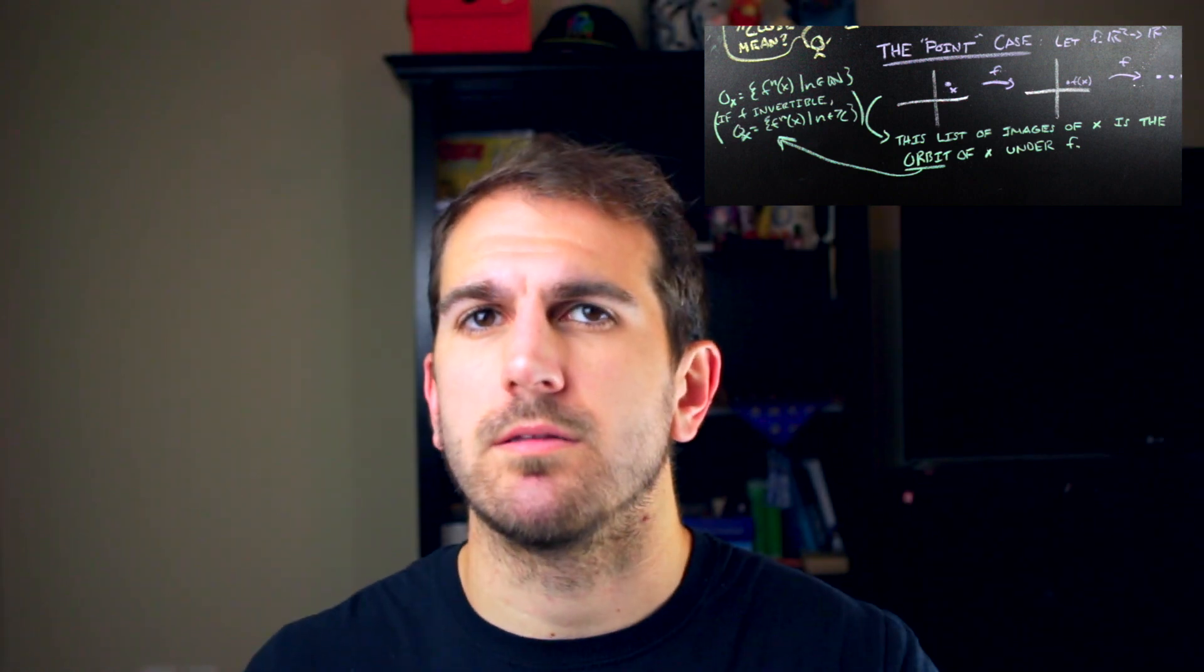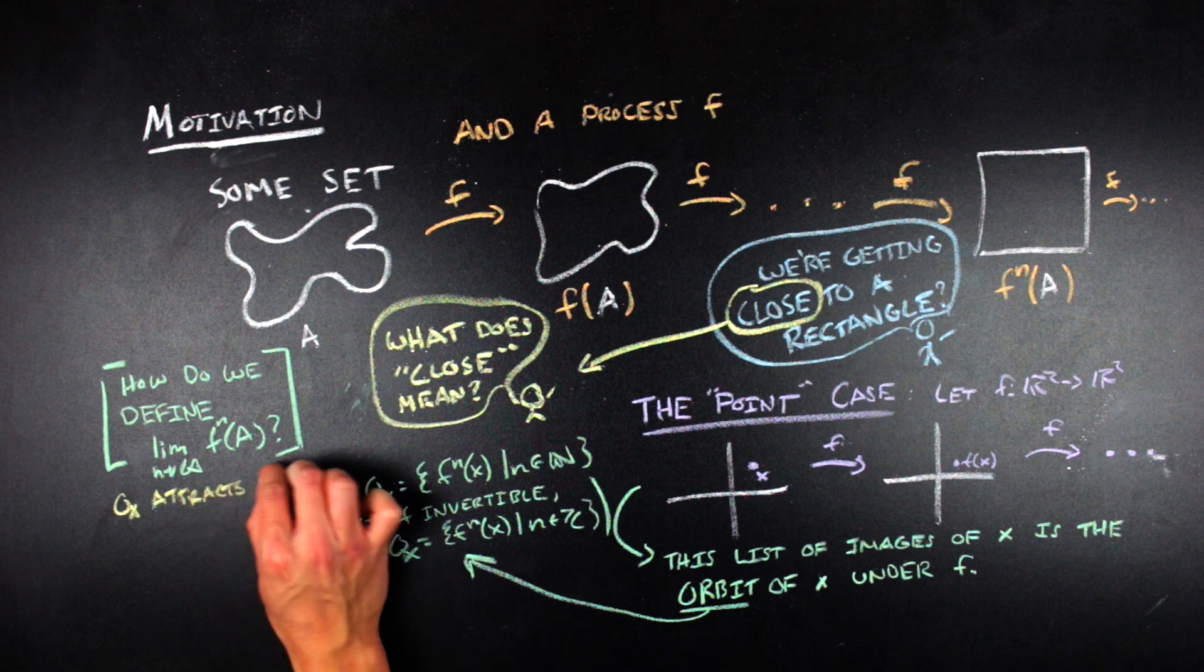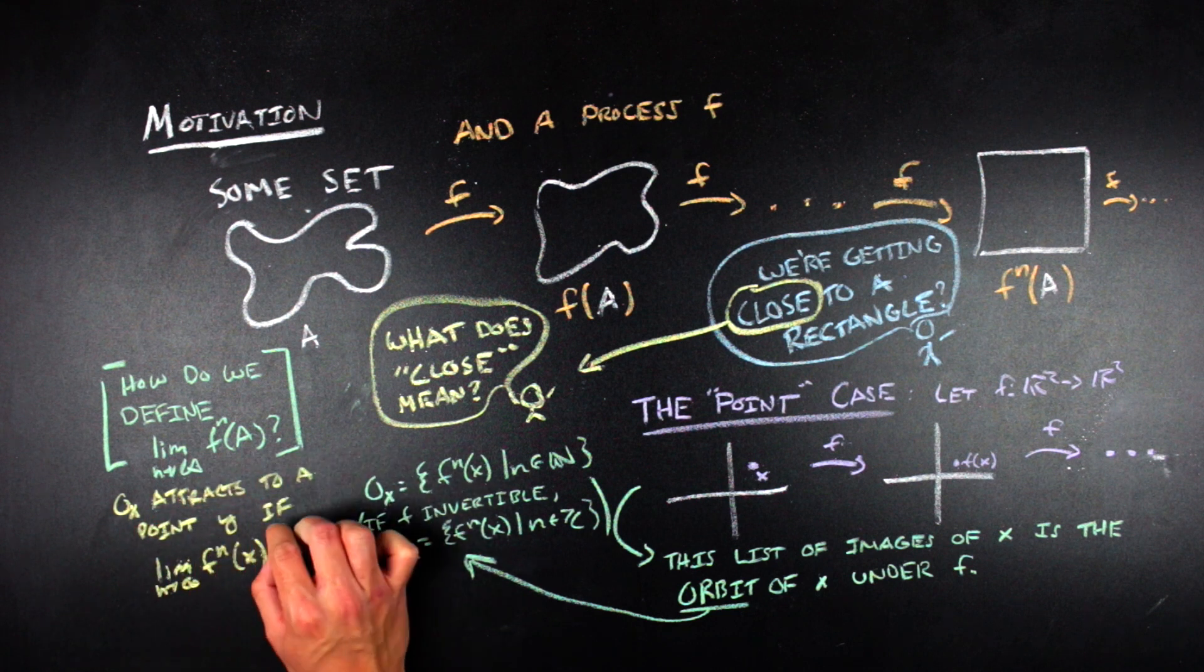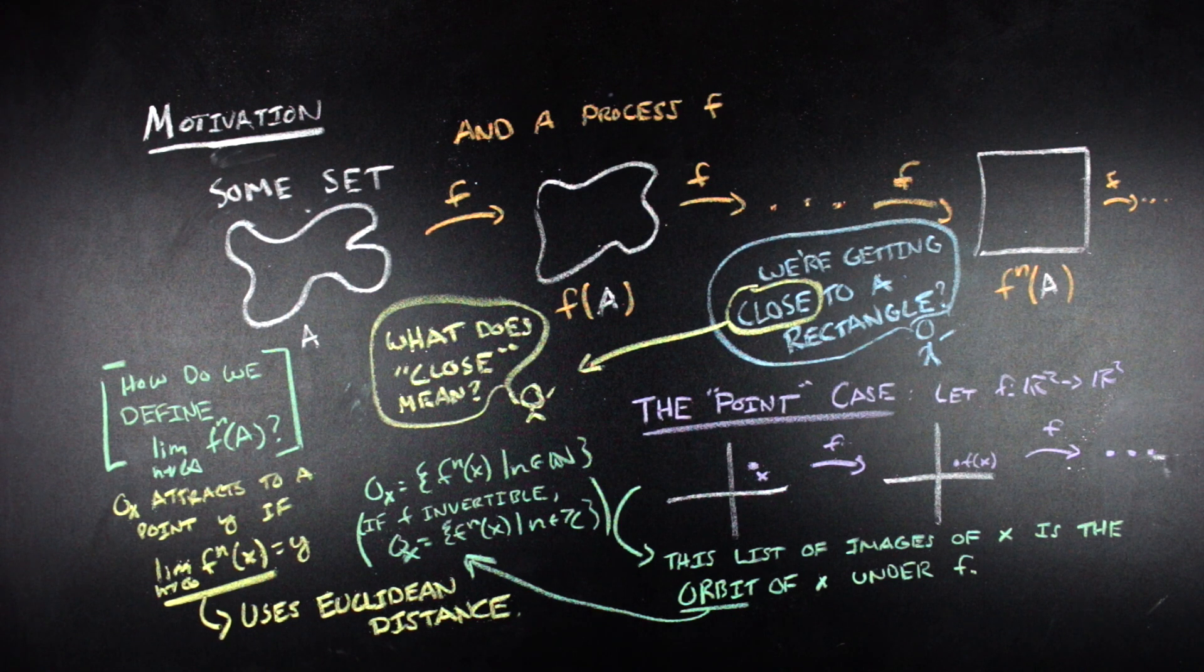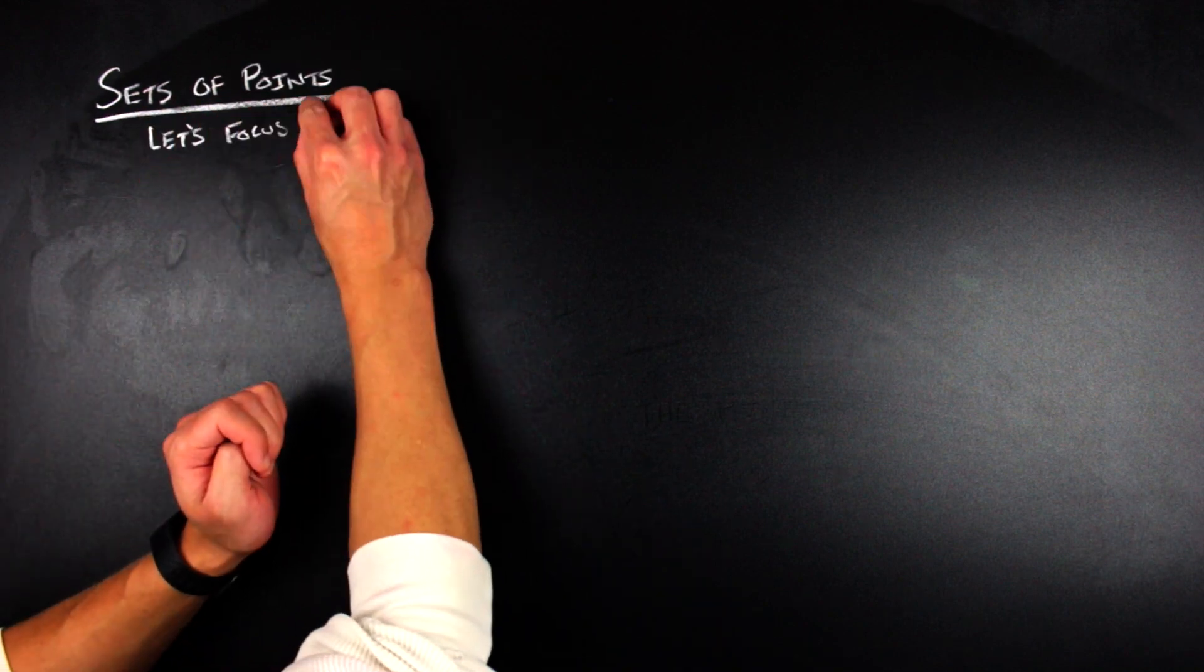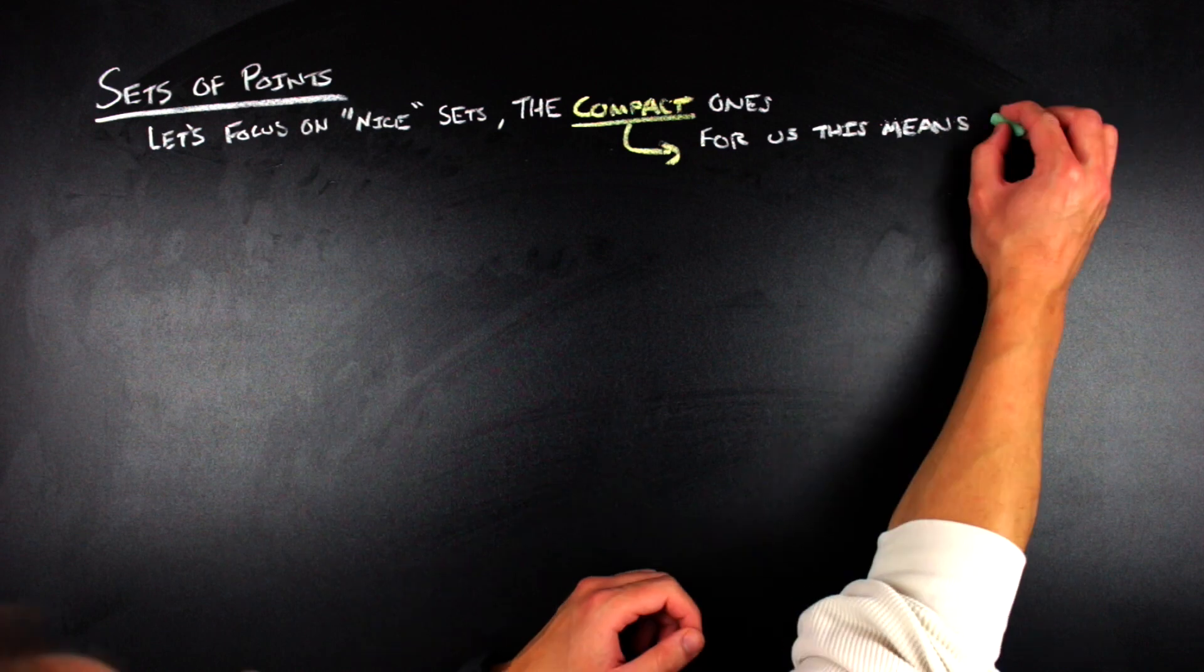If we want to figure out what this orbit attracts to, we just take the limit as n goes to infinity of the map applied n times to X. And we see how that limit evaluates by using Euclidean distance. And when I say Euclidean distance, I just mean the normal way that we think about distances between two points, the shortest straight line path between those two points, whatever the length of that line segment between the two is, that is Euclidean distance. But this doesn't work for sets of points because you've got multiple points that you're working with. So how do we go ahead and formalize this sort of idea of distance to sets?